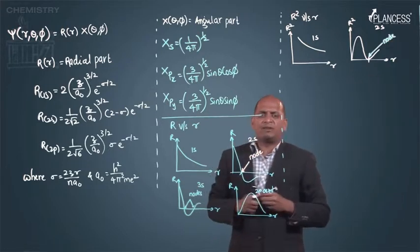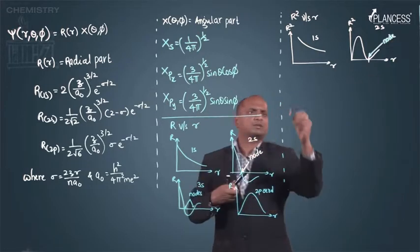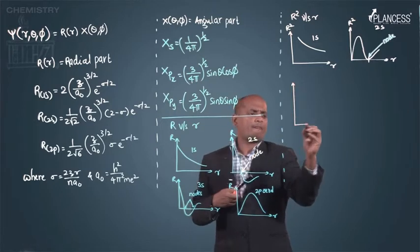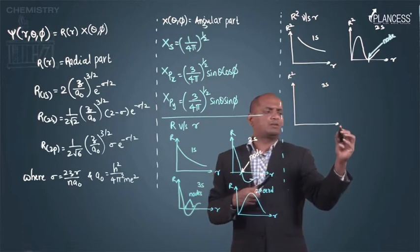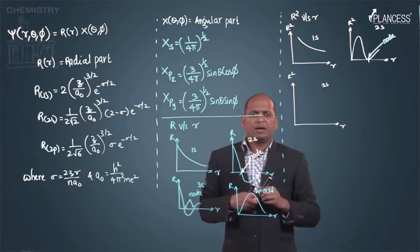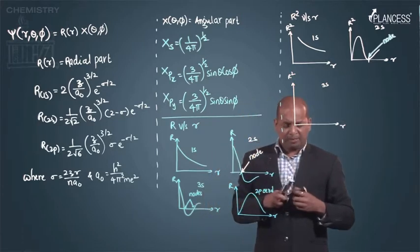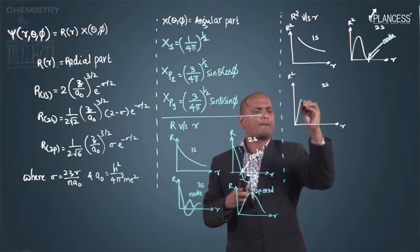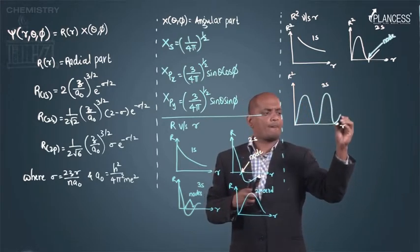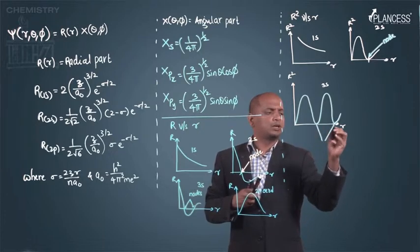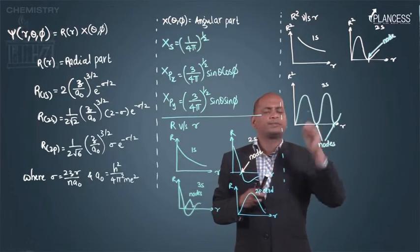Similarly, we can plot a graph for 3s, r² versus r, and we are getting a graph like this way.